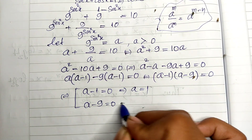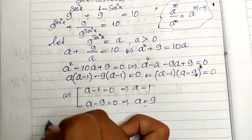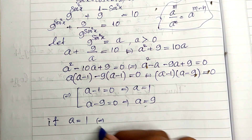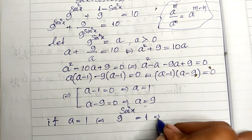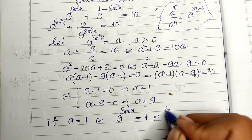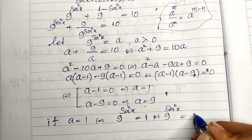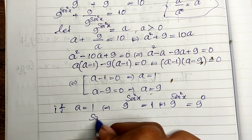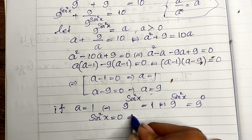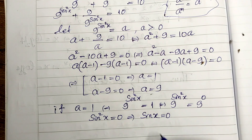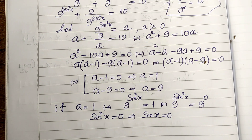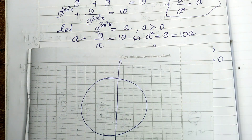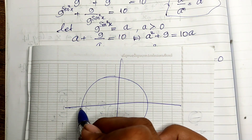So the two factors give us a minus 1 equals 0 and a minus 9 equals 0, meaning a equals 1 or a equals 9. If a equals 1, then 9 to the power of sine squared θ equals 9 to the power of 0, so sine squared θ equals 0, which gives sine θ equals 0.